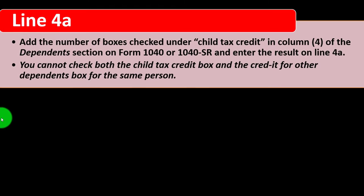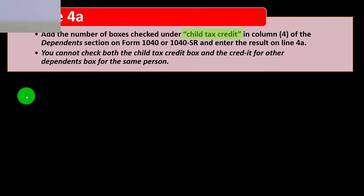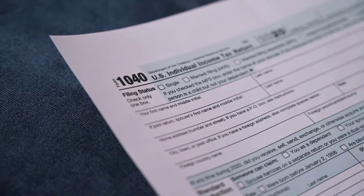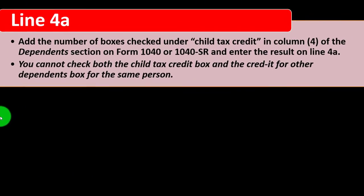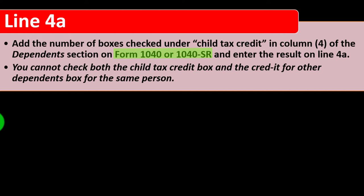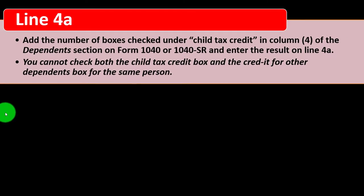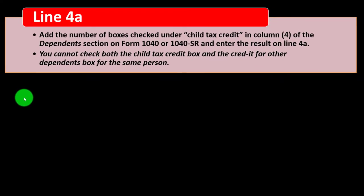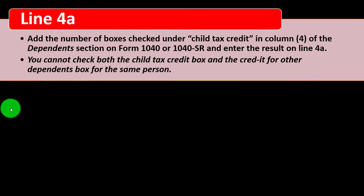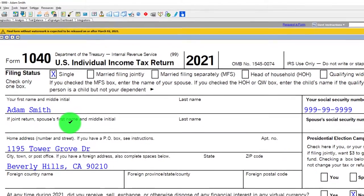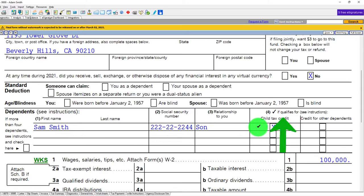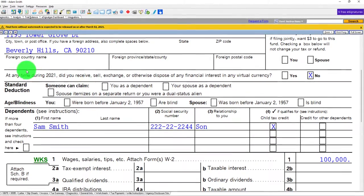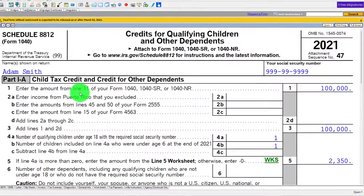We're going to add the number of boxes checked under the child tax credit — the children that qualify for the child tax credit — which we can see on page 1 of Form 1040, column 4 of the dependents section on Form 1040 or 1040-SR, and enter the result on line 4A. You cannot check both the child tax credit box and the credit for other dependents box for the same person.